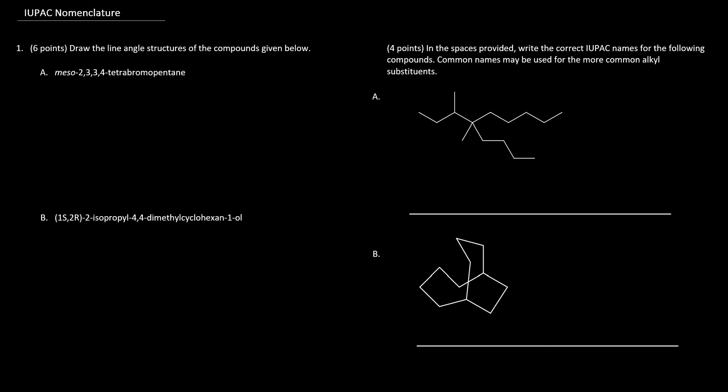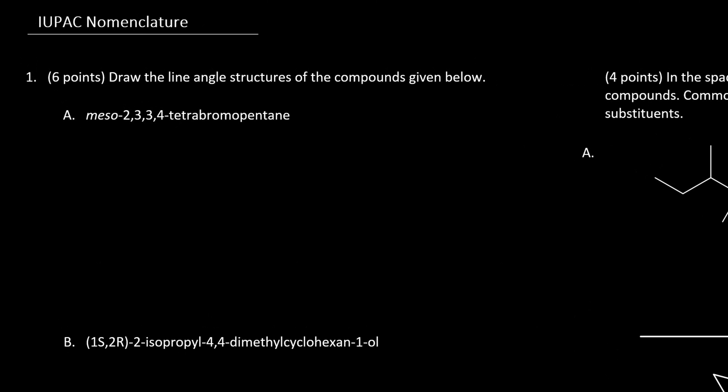This is an exam review question related to IUPAC nomenclature. On the left, draw the line-angle structures of the compounds given below, and on the right, we provide the IUPAC name for the structures given. We're told we can use common names for common alkyl substituents. Let's get into it.